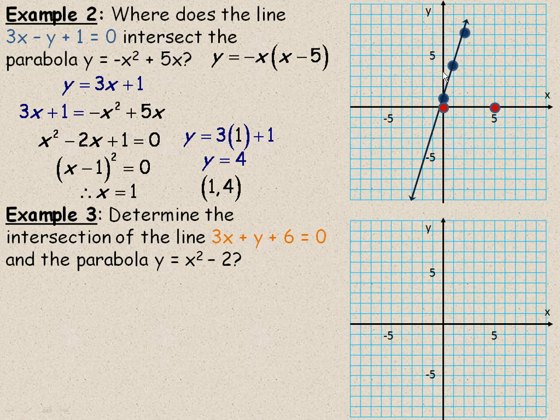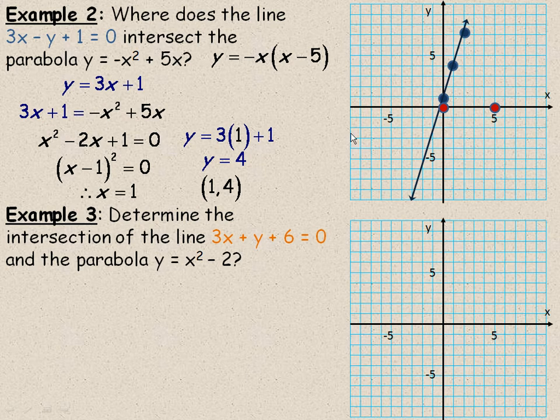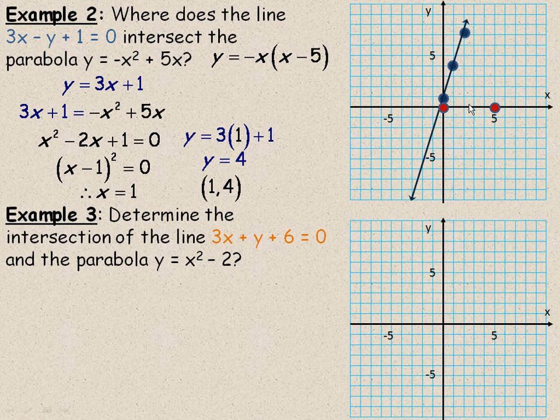Remember, the negative in front here means that it's a downward opening, so the vertex is up here somewhere. And we can find where that vertex is because it's in factored form now. The x-coordinate should be at 2.5. So the vertex has an x-coordinate of 2.5.